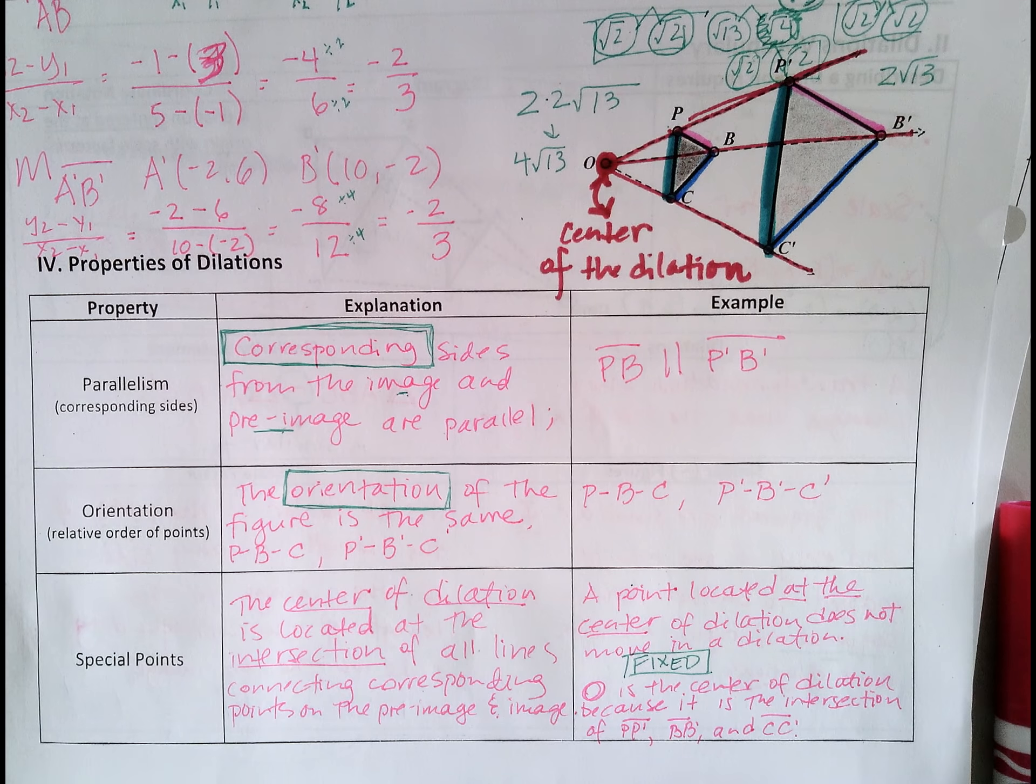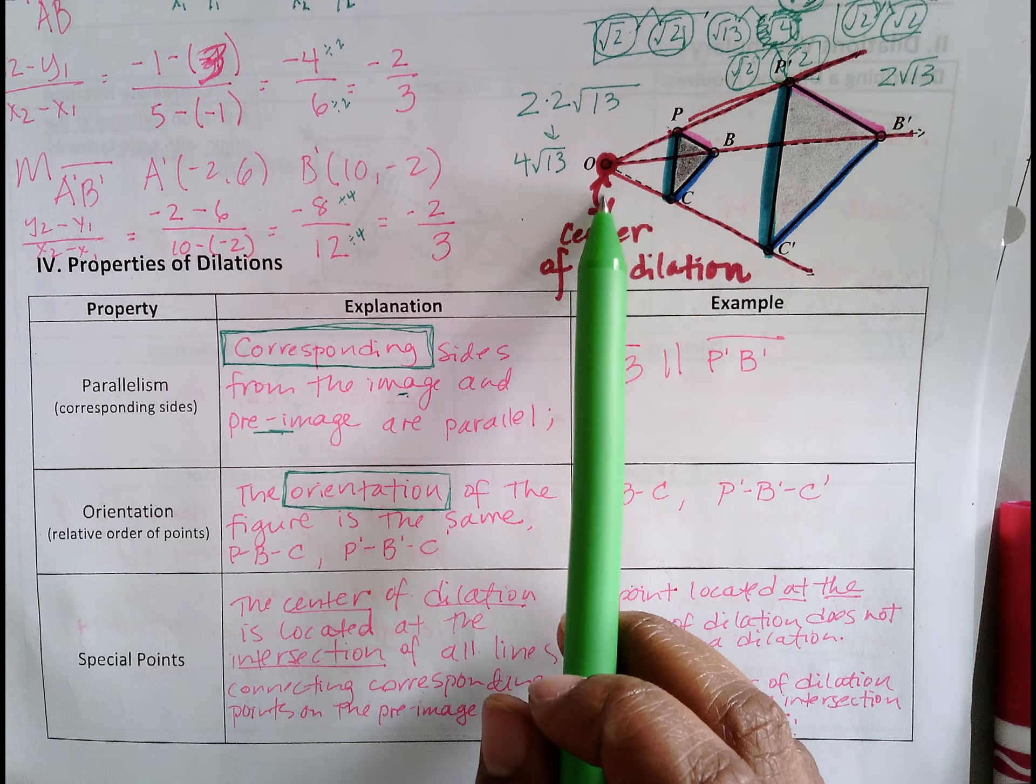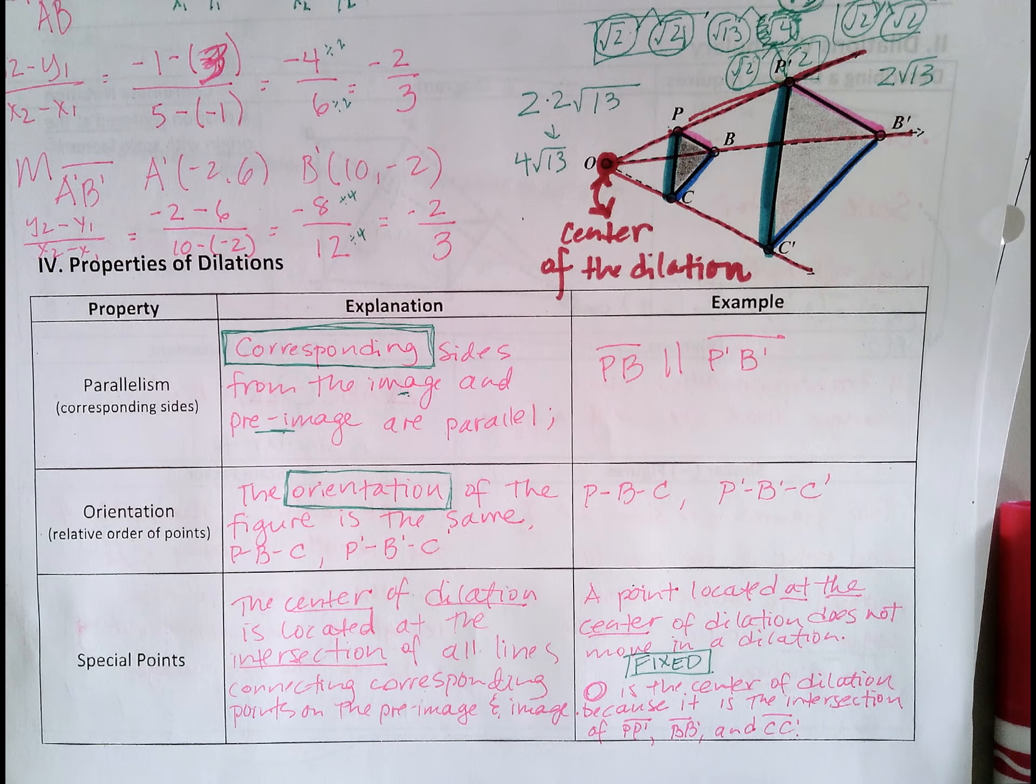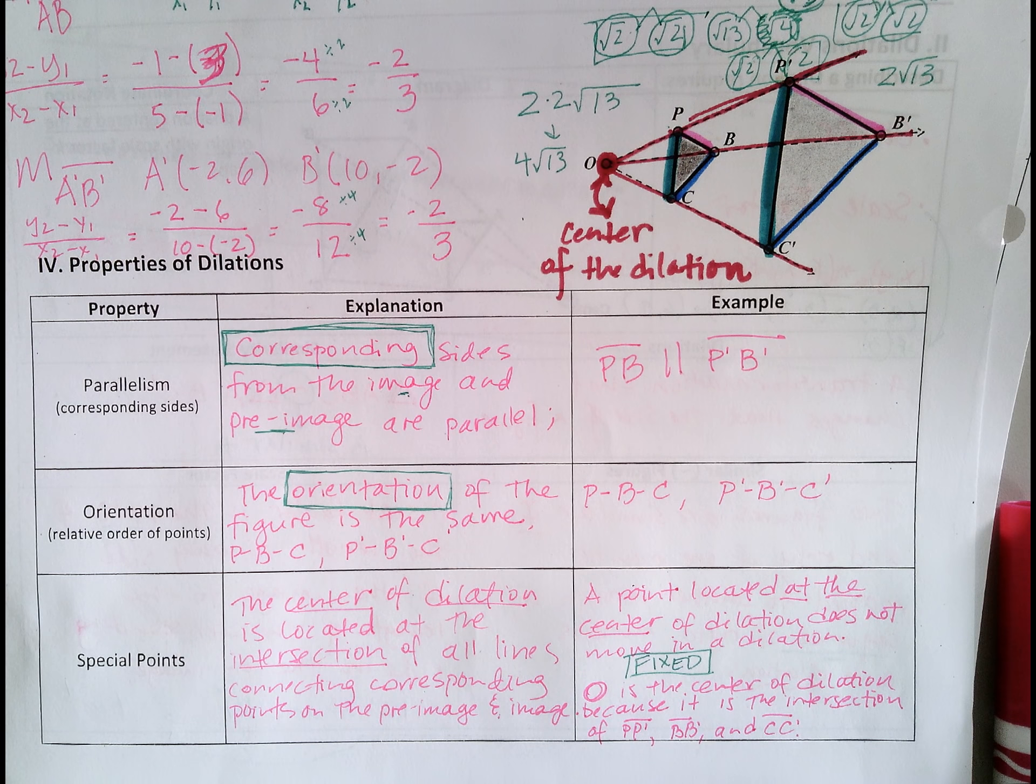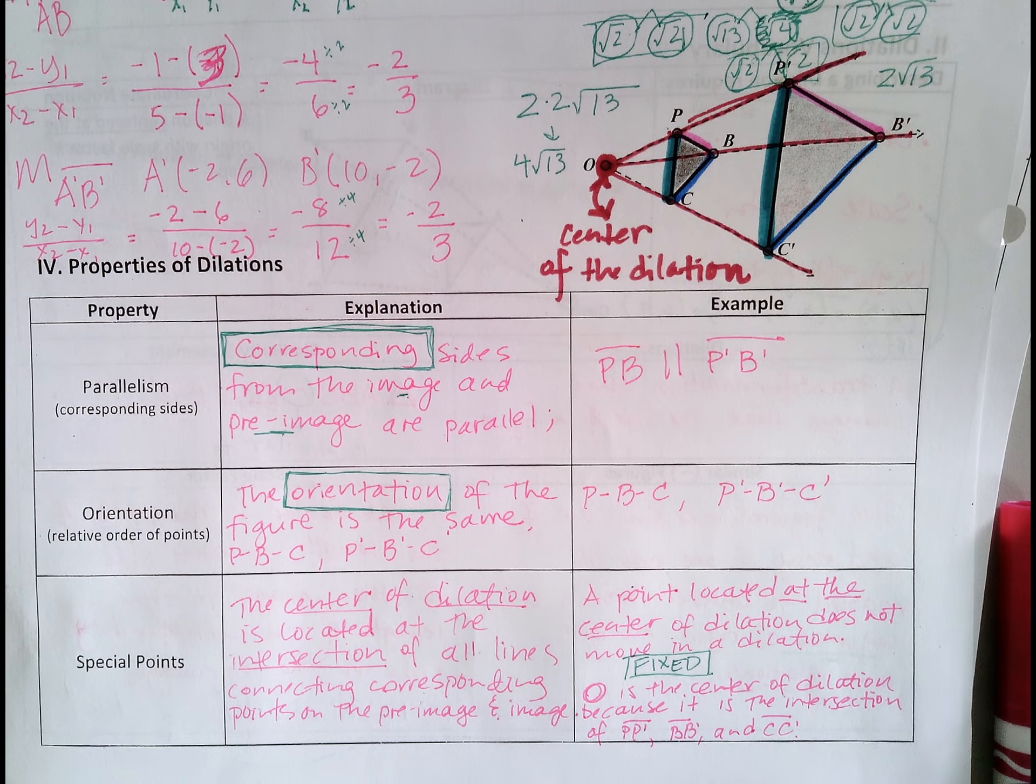And in this case, O is the center of dilation because it is the intersection of PP prime, BB prime, and CC prime.